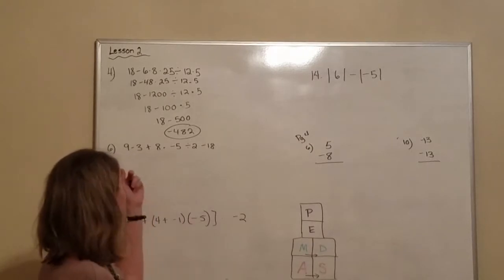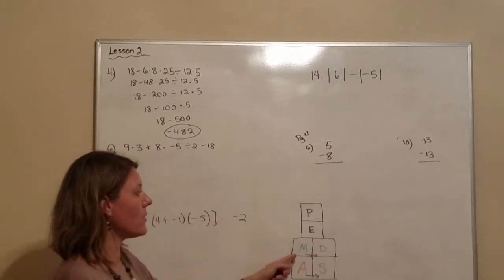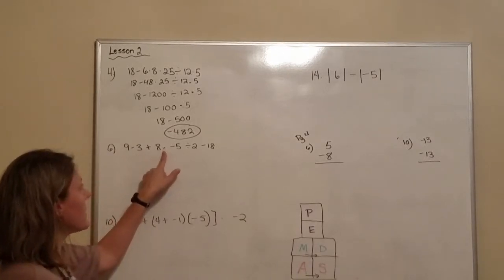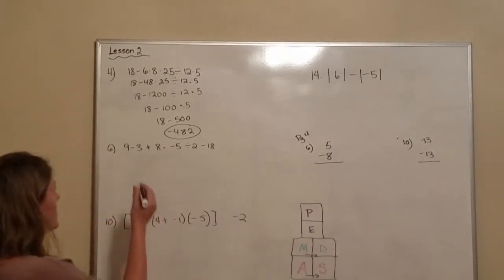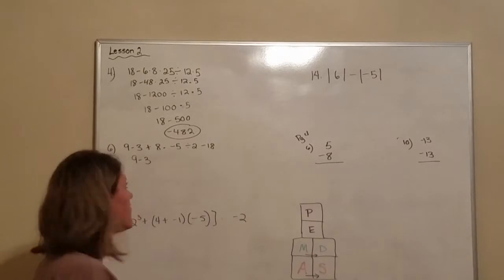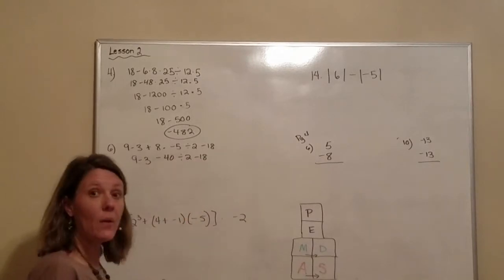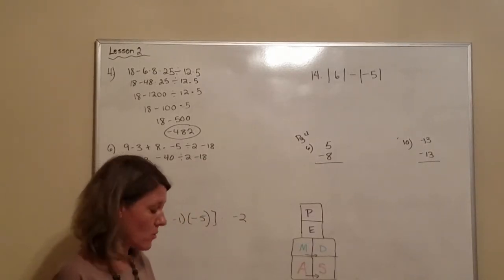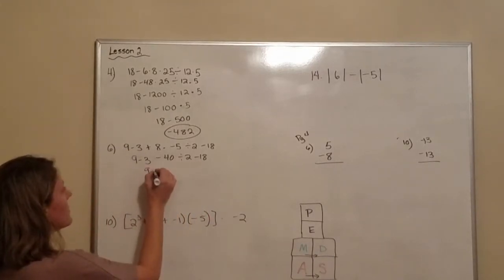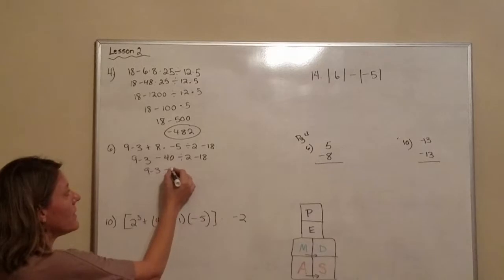So now we're going to move on to number 6. And again, we don't have any parentheses or exponents. So we're going to look for multiply or divide from left to right. So we have a multiplication. We will do that first. So we have 9 minus 3. Well 8 times negative 5 is negative 40. Now we're going to look to see if there's any more multiplication or division, and right here is another division. So we'll do that next.